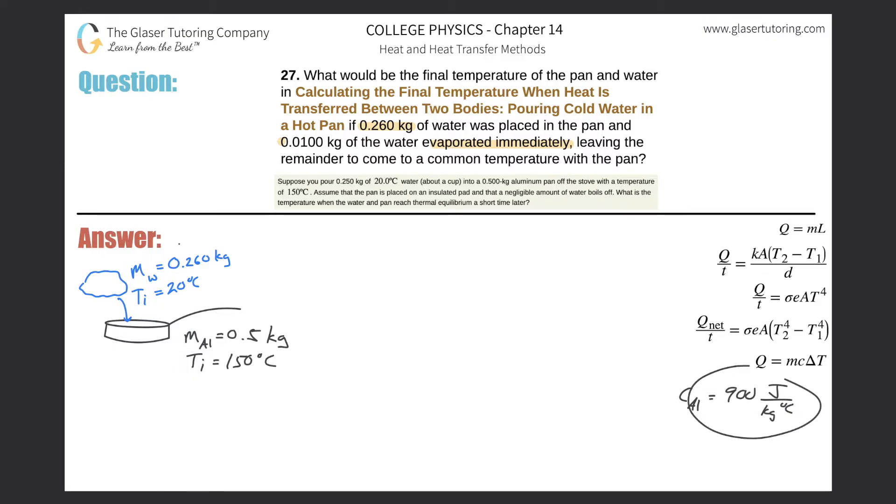The aluminum is about 900, so the final temperature will lie not in the middle of these two, but closer to the initial temperature of water than to the initial temperature of the aluminum, which should be well below 100. So I know it's not gonna evaporate at all, except for the 0.01 kilogram that they mentioned.